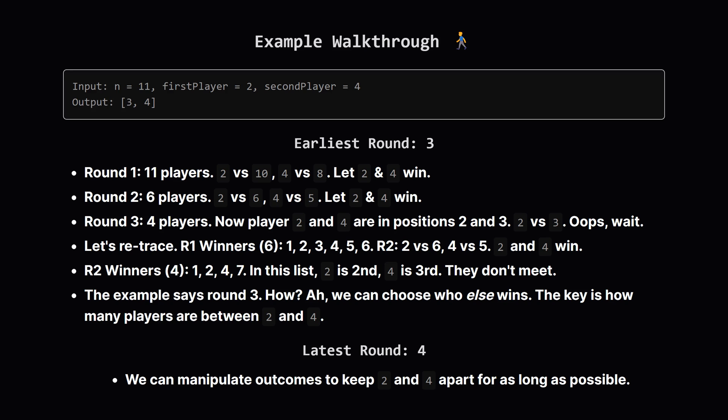Let's walk through the example. We have 11 players and we're watching player 2 and player 4. To get the earliest meeting, we want to eliminate players around them, but we must also ensure they both win their own matches to stay in the tournament. The key is realizing that their positions change based on how many other winners there are with smaller numbers. For the latest round, we do the opposite — we try to keep as many players between them as possible by carefully picking winners in other matches. Trying to simulate every single possibility would get out of hand really fast, so we need a more structured approach.